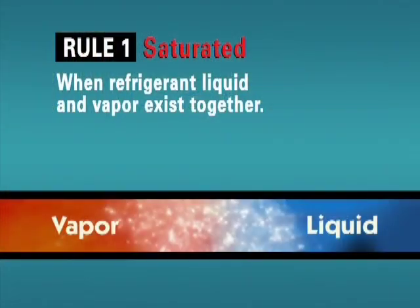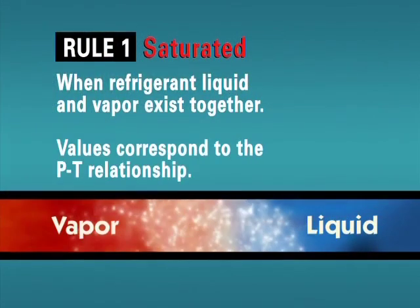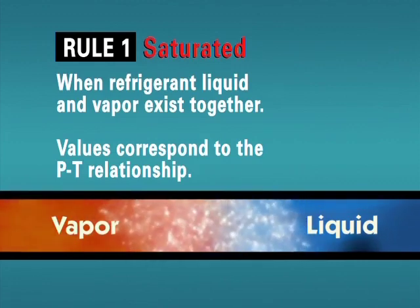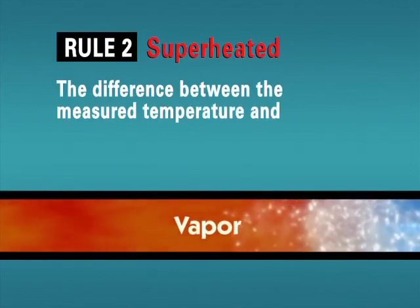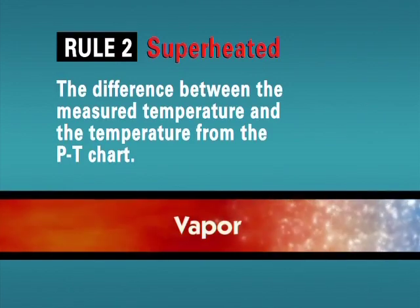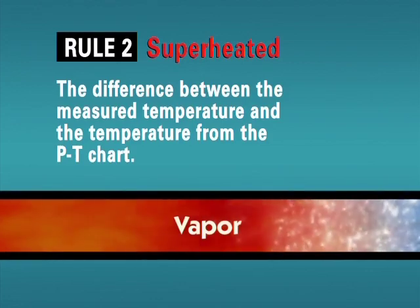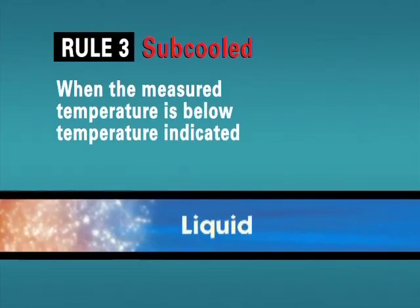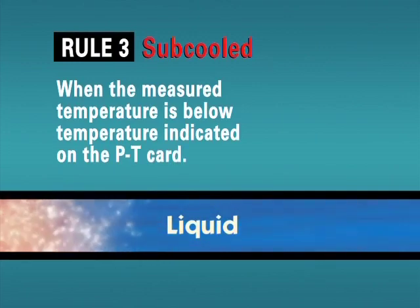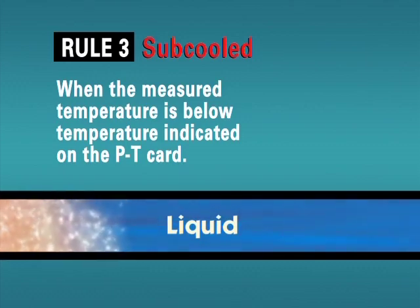So let's recap. There are three basic rules for determining the refrigerant condition in an operating system. Rule 1: When we have refrigerant liquid and vapor existing together, we have saturated refrigerant, and the pressure and temperature will correspond to our PT card. Rule 2: If our measured temperature is above the saturated temperature indicated on our PT card, we must have superheated vapor. The amount of superheat is the difference between our measured temperature and the saturated temperature. Rule 3: If our measured temperature is below the saturated temperature indicated on our PT card, we must have subcooled liquid. The amount of subcooling is the difference between our measured temperature and the saturated temperature. Understanding these rules, and knowing where these three conditions can occur, will enable you to use the PT card or the ChillMaster app as a vital tool in diagnosing system problems.